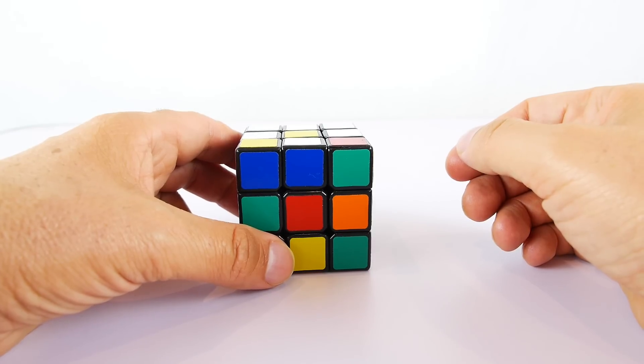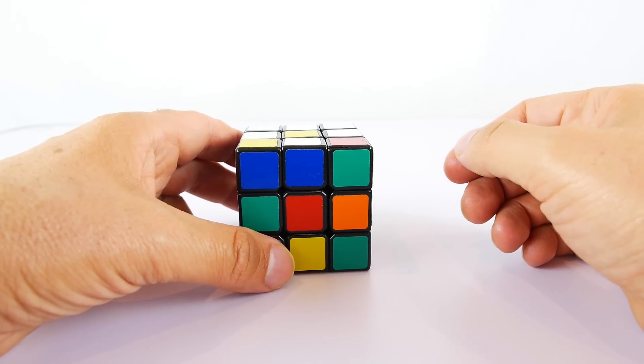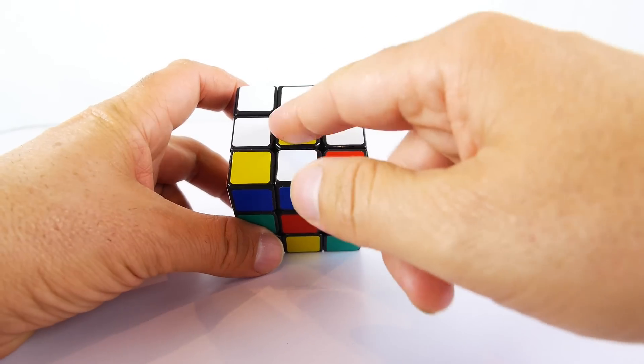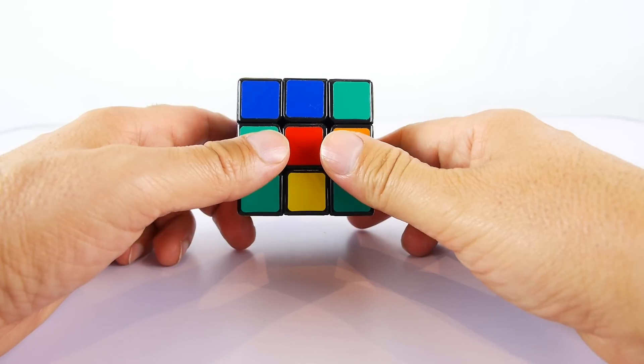Welcome to lesson two of how to solve the Rubik's Cube. In the first lesson, I showed you how to create the cross around the yellow center square. The next one is also very easy.